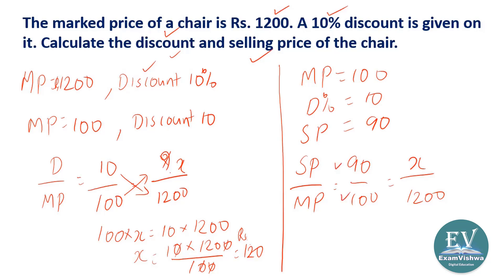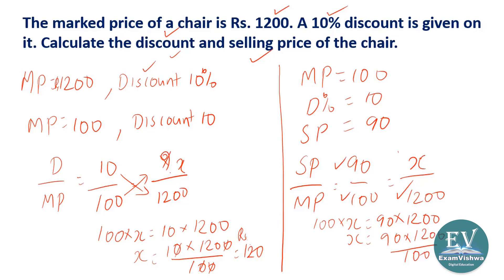Suppose market price is equal to 100, discount percentage is 10, that means selling price will be 90. So if you make a relationship of selling price upon market price: 90 rupees if market price is 100 — how much would it be if market price is 1200? Cross multiply: 100 into X equals 90 into 1200. X equals 90 into 1200 upon 100. Canceling, we get 12 into 90 — which is 1080. So 1080 is the selling price.